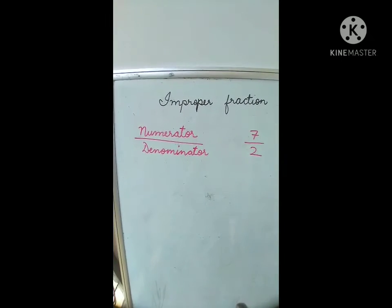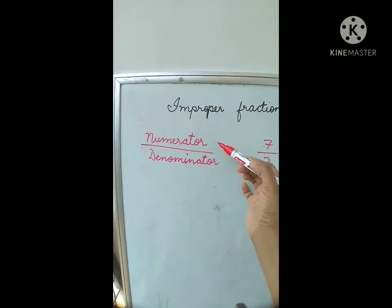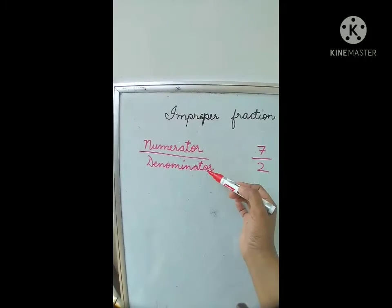Now, as you all know, a fraction has two numbers. One is the numerator, which is written above the line, and the other one is the denominator.